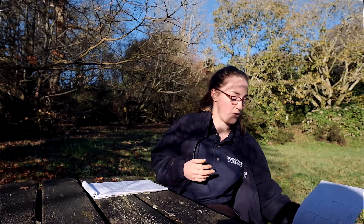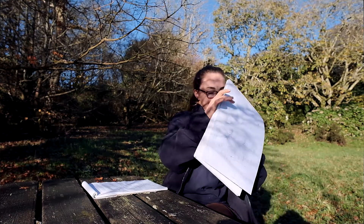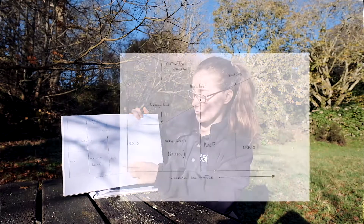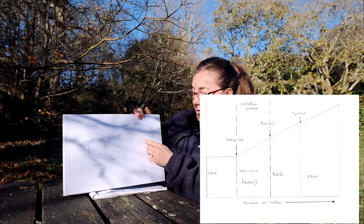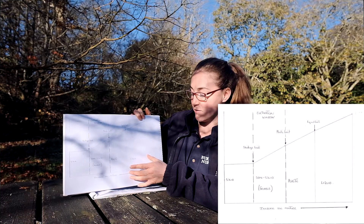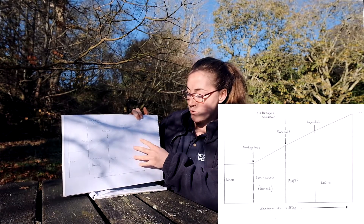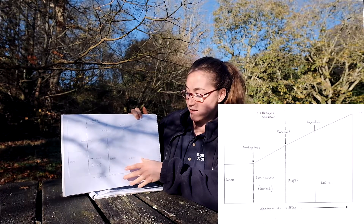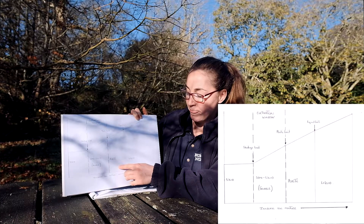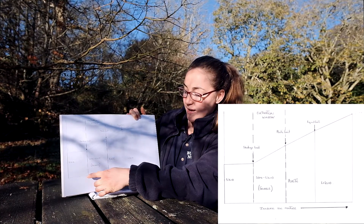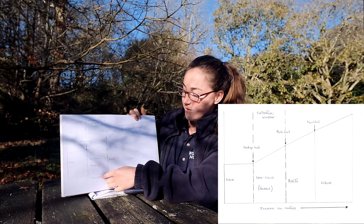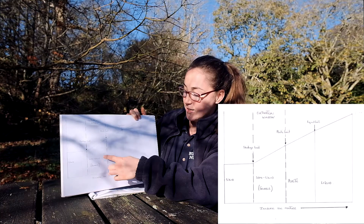This diagram will show you. In the field where you've got the most amounts of water at the point of the year, as the water infiltrates and trickles down it starts to dry out until it gets to a point called the plastic point. After that it goes into a semi-solid and then you get to the solid. The cultivation window is between semi-solid and plastic.